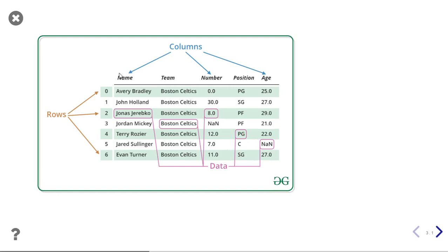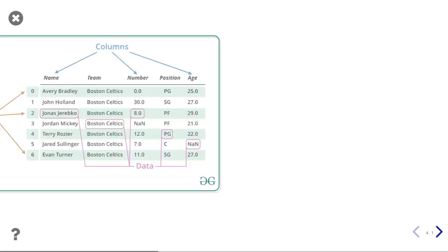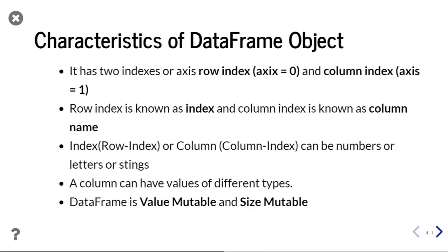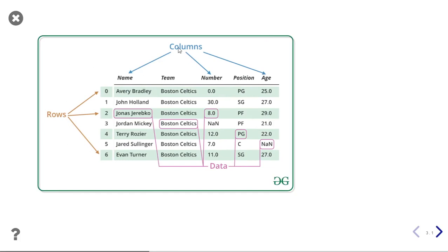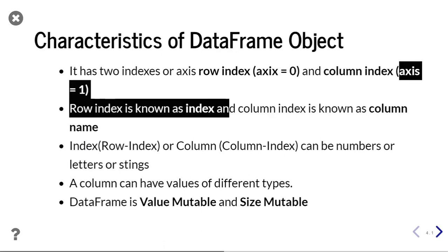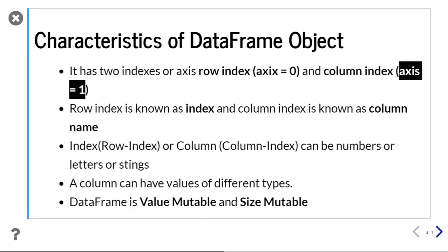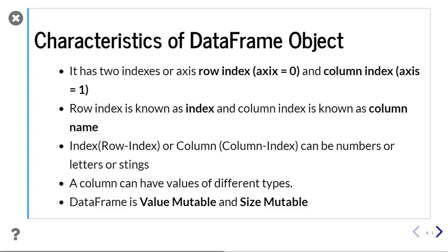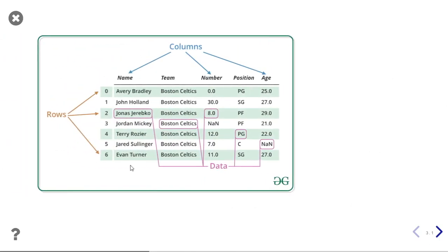Let us now see the characteristics of a DataFrame object. As you can see, there are two indexes or axes in a DataFrame — there are rows and there are columns. Column will have axis 1 and rows will have axis 0. This is notation from pandas. If we give axis equal to zero it will refer to rows, and if I give axis equal to one then it will refer to columns. You should remember this: axis 0 is rows and axis 1 is columns. You can remember it by noting that column is vertical, so it represents 1.